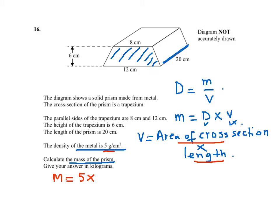It's 12 plus 8 divided by 2 times the height of the prism, which is 6.